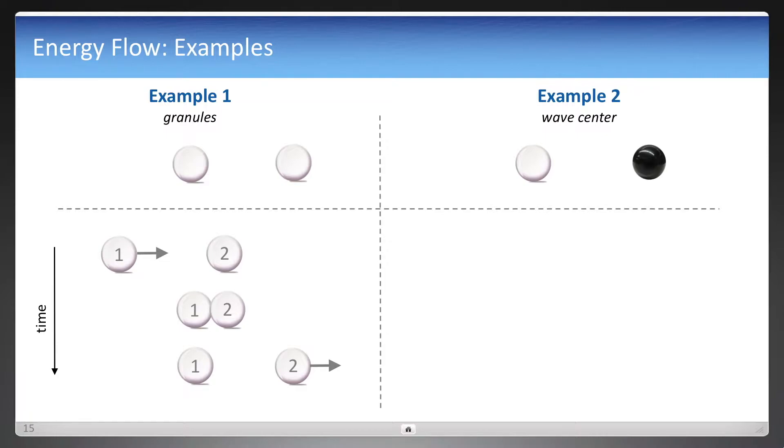But now a billiard ball hits a wall and reflects, and you see that process here. Or maybe it's an air molecule bouncing off an elastic balloon, but you can visualize now how these granules might be transferring energy from one to the next and then reflecting off something and transferring its energy in the opposite direction.